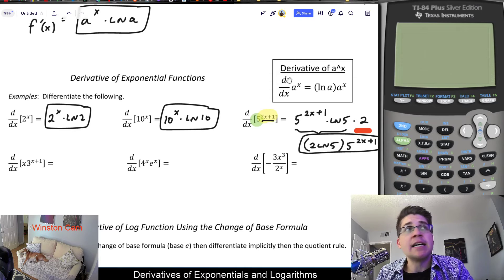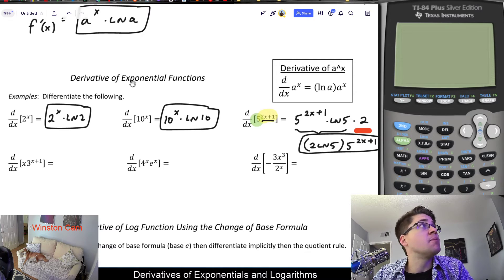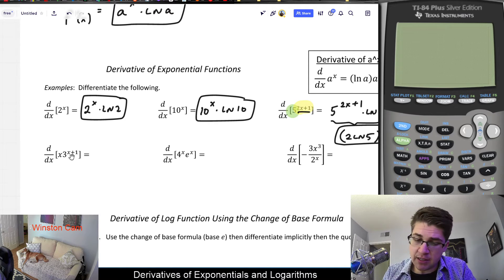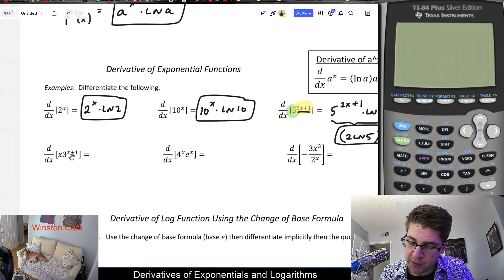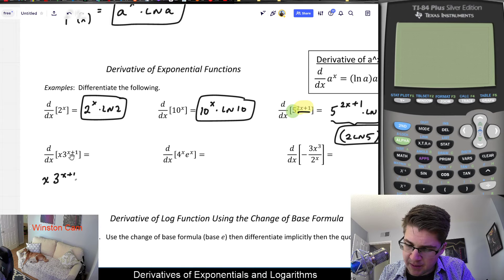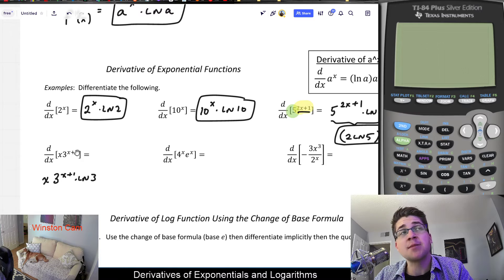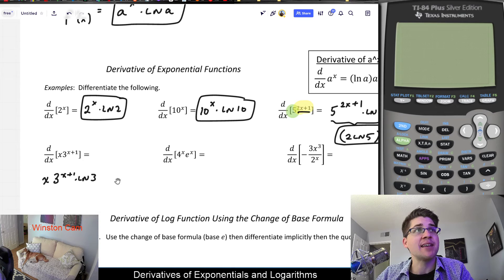And say we had x times 3 to the x plus 1. Now, here we would need the product rule because I have something times something. So I need to do first d second plus second d first. So first d second would leave me with 3 to the x plus 1 times ln 3. Again, when I'm taking the derivative of any exponential, I'm using the rule and nothing changes. I'm just multiplying by the natural log of the base as I'm doing so.